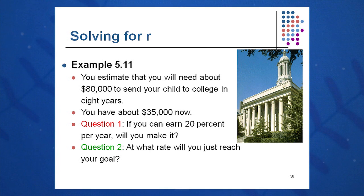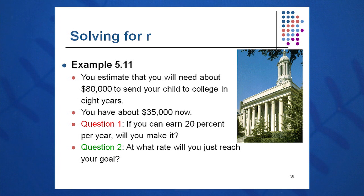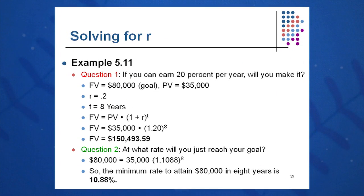Here's a very practical investment example: sending your child to college. You'll need about $80,000 and you estimate sending your child to college in eight years. You have about $35,000 saved up now and you can earn 20% per year. Will you make it if you aggressively invest that? That sounds like a high-risk investment, but you think you can get that sort of return. Future value equals present value times 1 plus R to the T: $35,000 times 1.2 to the eighth — and you're all set with about $150,000.